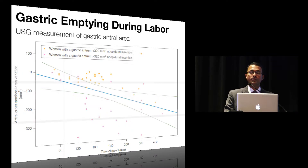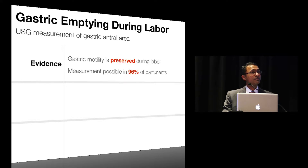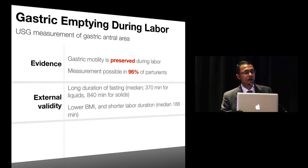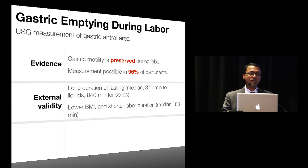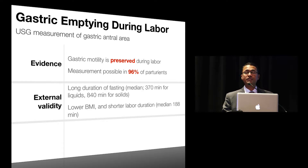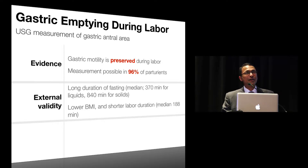This is the first study to provide evidence that gastric motility is preserved during labor, and the measurement was possible in up to 96% of parturients. However, there are questions about external validity. These patients all had longer fasting durations — the median was almost six hours for liquids and more than nine hours for solids — and all had lower BMIs, with a median BMI of 27. The median duration of labor was also very short, about three hours, so the measurements may not be feasible in all patients.